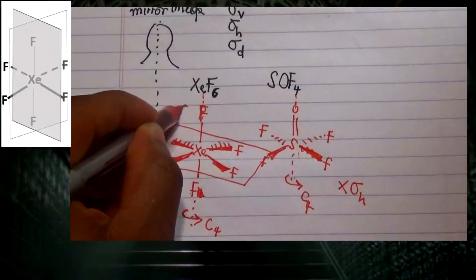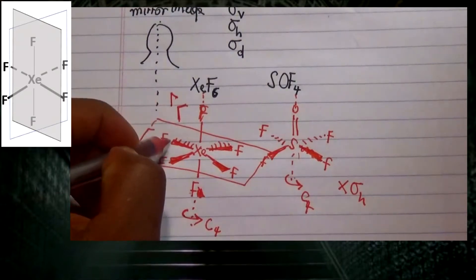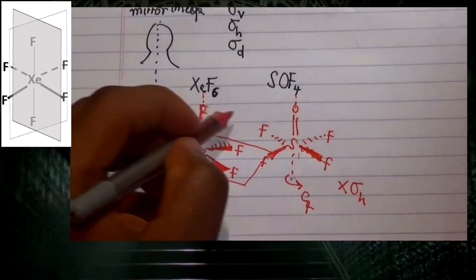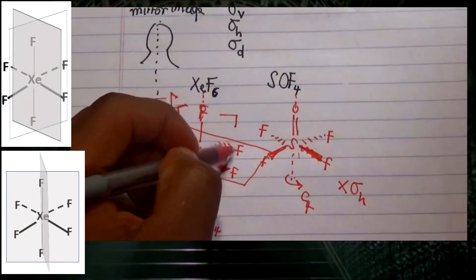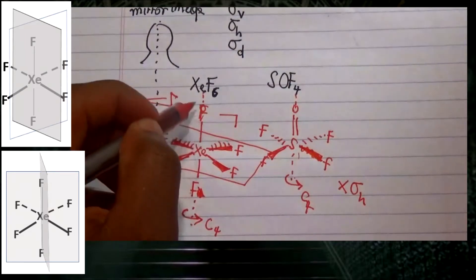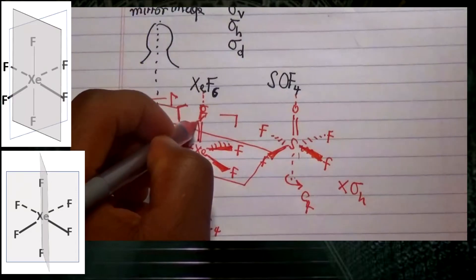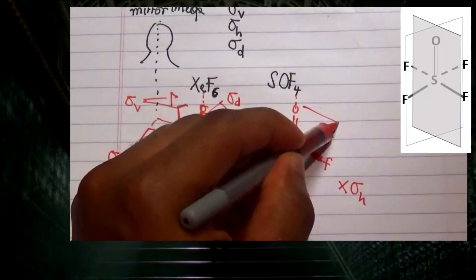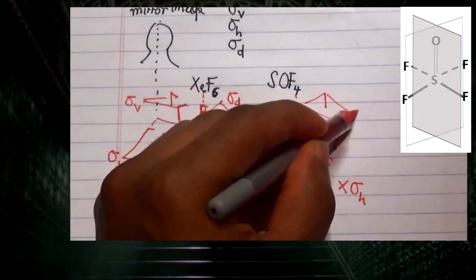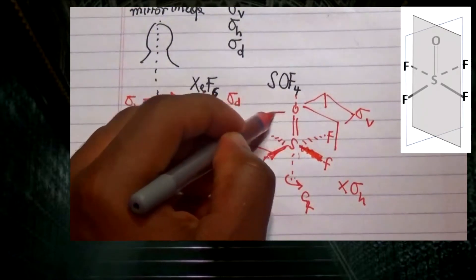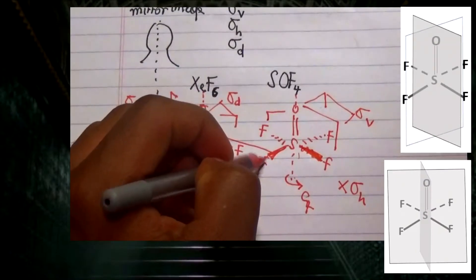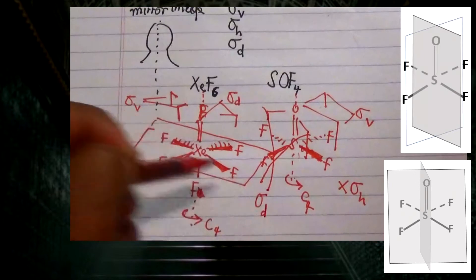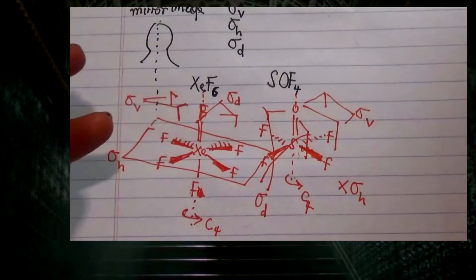Both compounds also have other planes present. Planes passing through the fluorine atoms — if passing through a bond, they are sigma v; if passing dihedrally between two atoms, they are sigma d. In xenon fluoride, two planes are sigma v and two planes are sigma d. Similarly in sulfuryl fluoride, two planes are sigma v and two planes are sigma d.